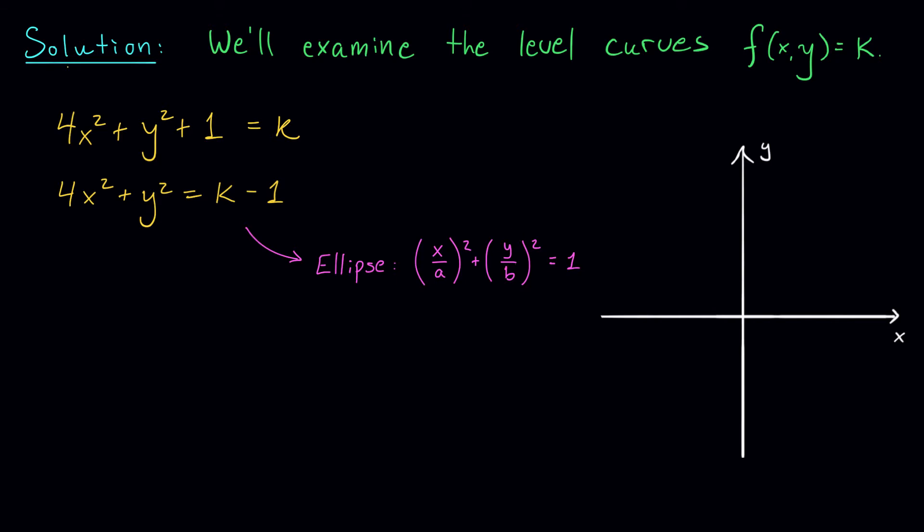Okay, so I'm going to try to make this equation here look a little bit more like the equation of an ellipse. And I first notice that I have 1 on the right-hand side. So I'm going to divide both sides of this equation by k - 1. That gives me 4x²/(k-1) + y²/(k-1) = 1.